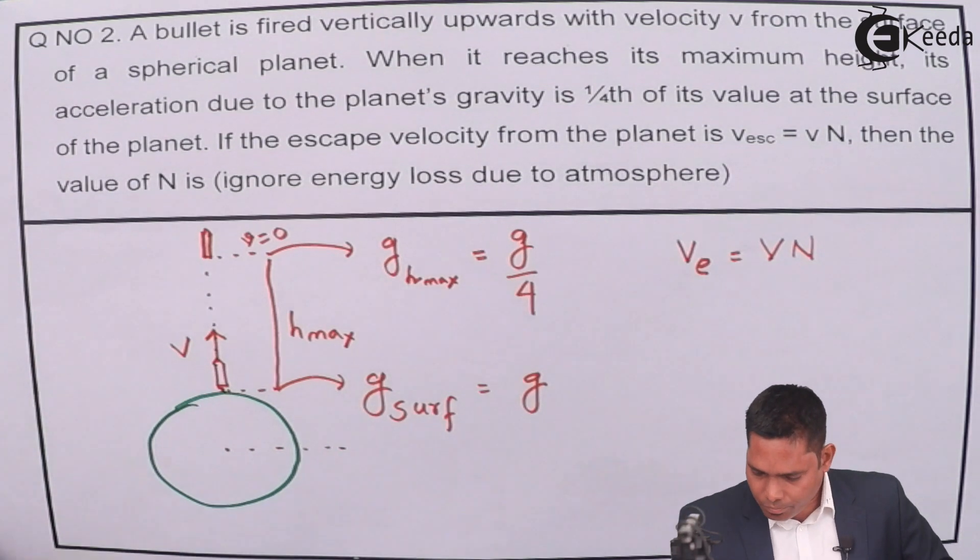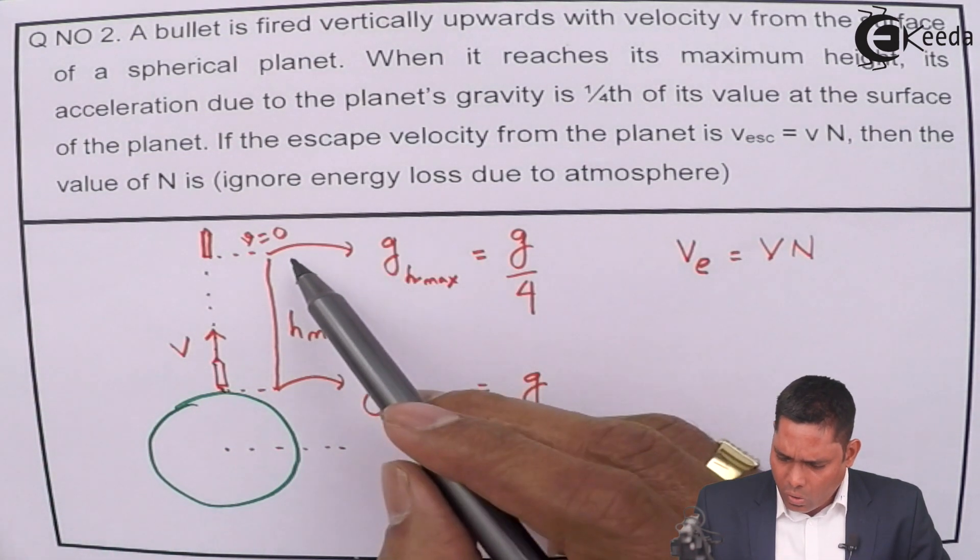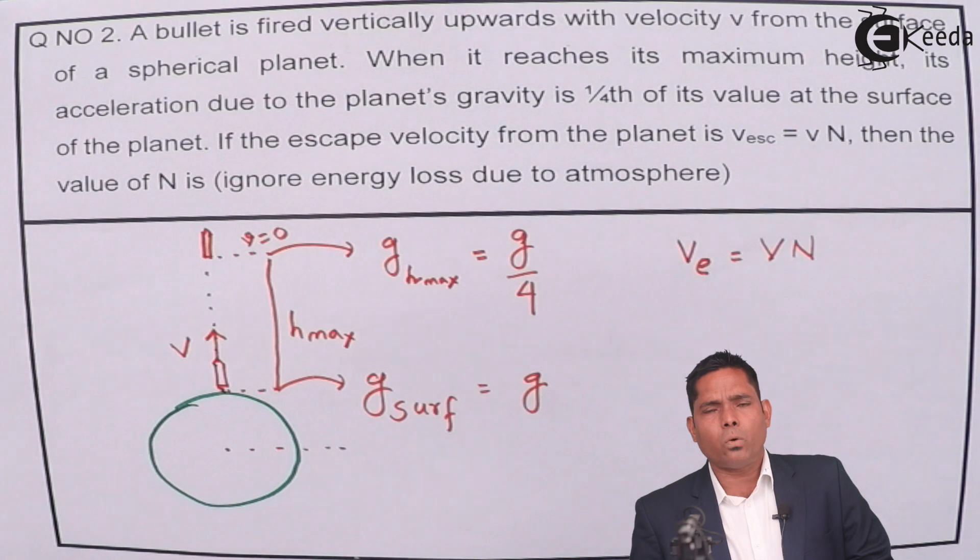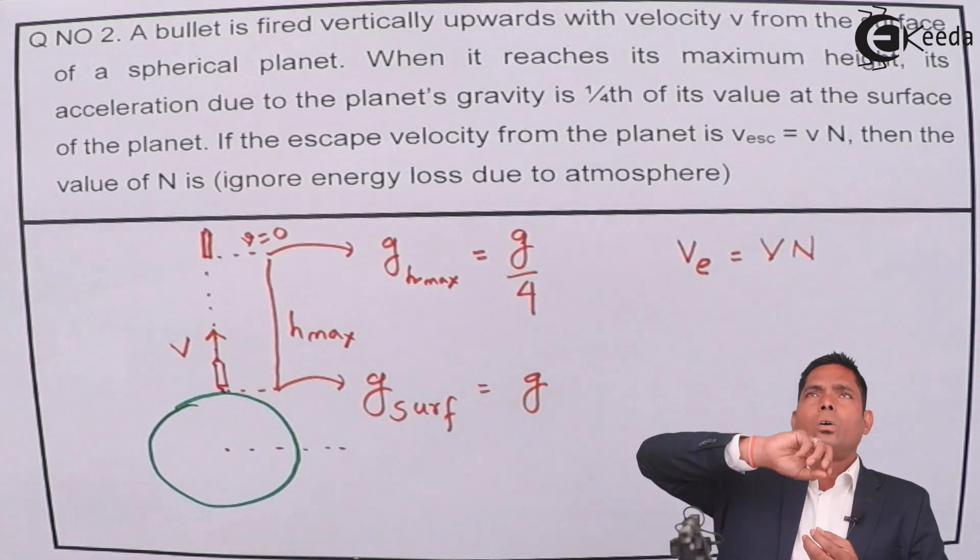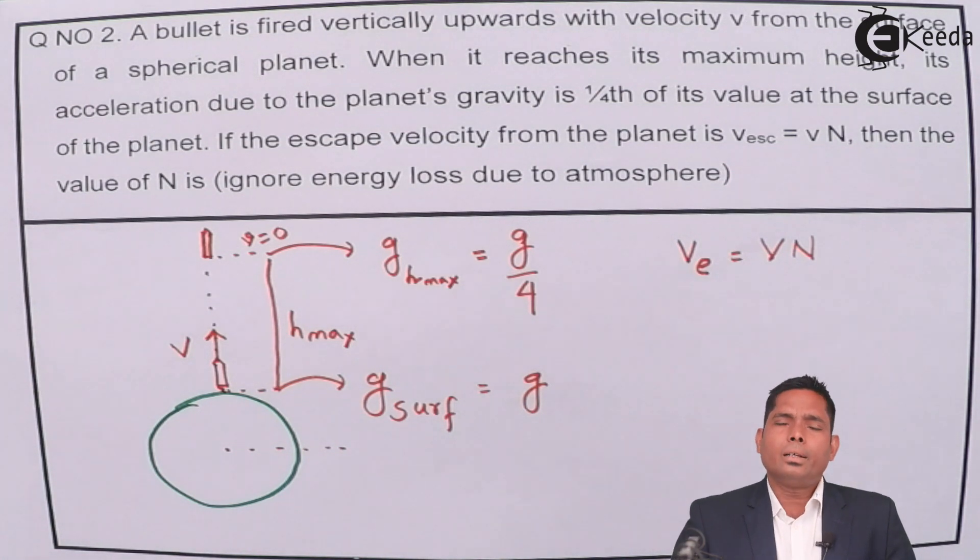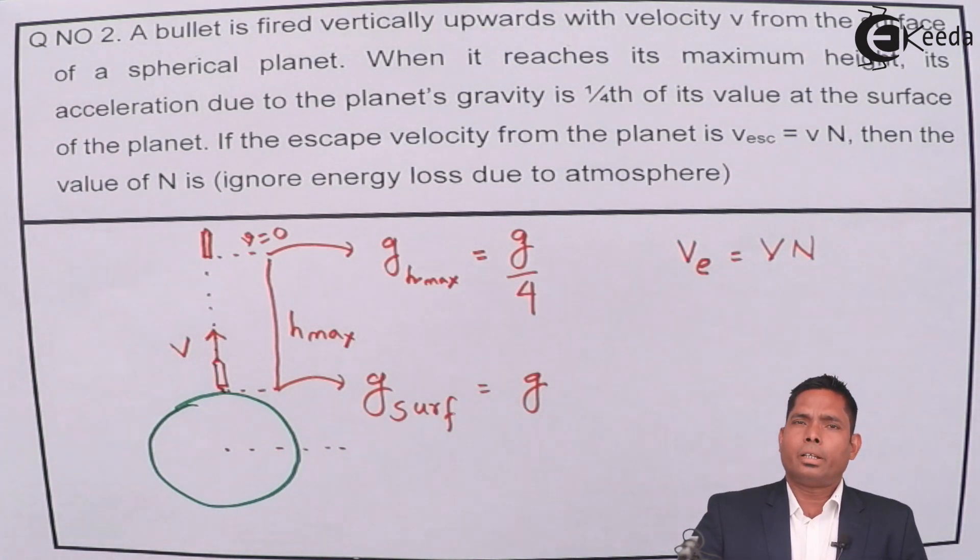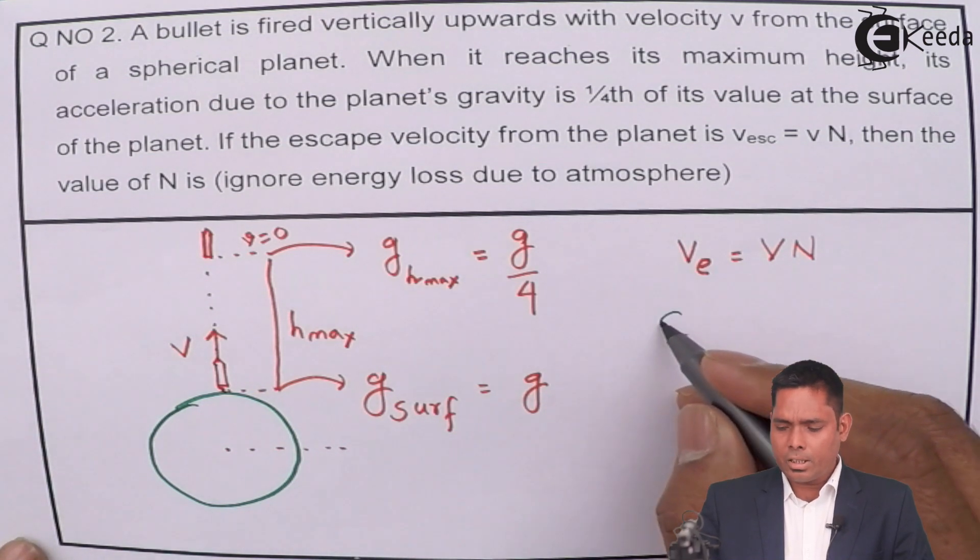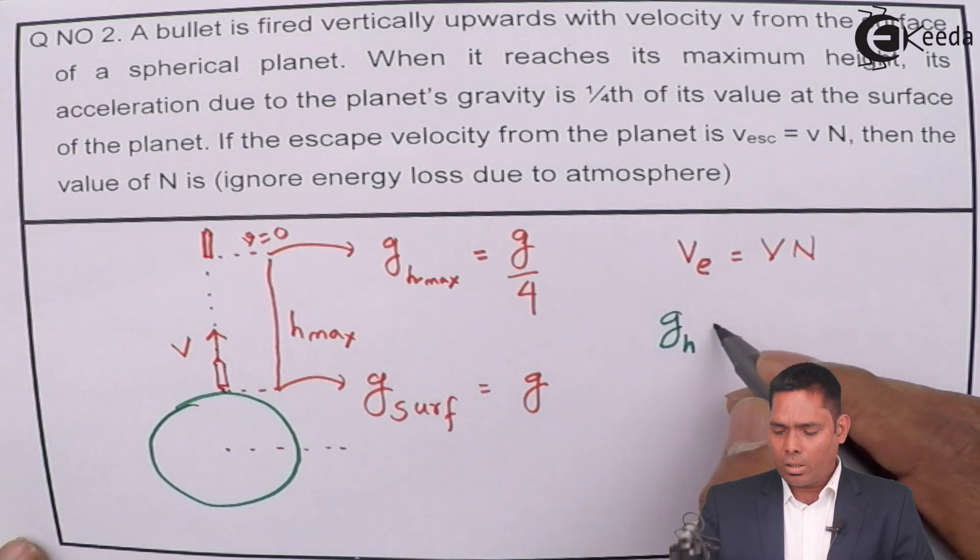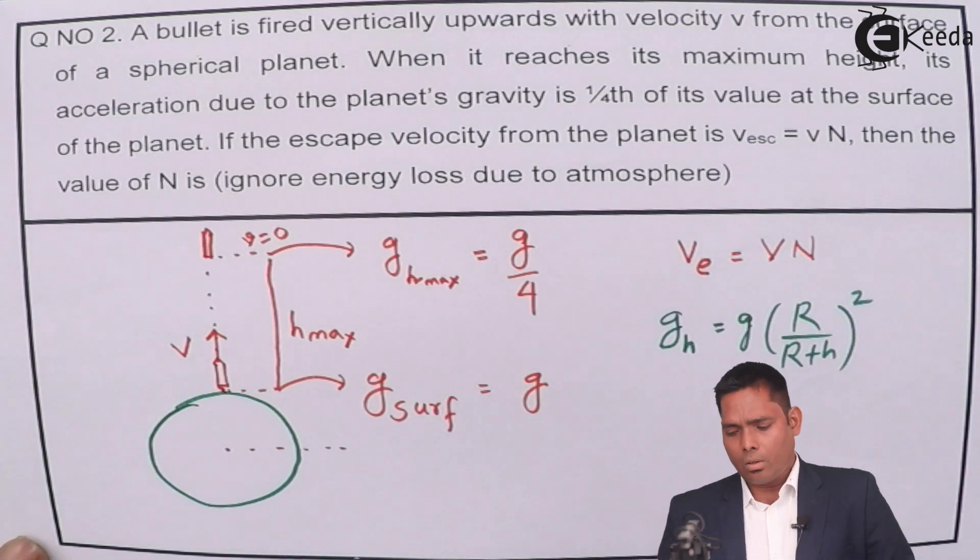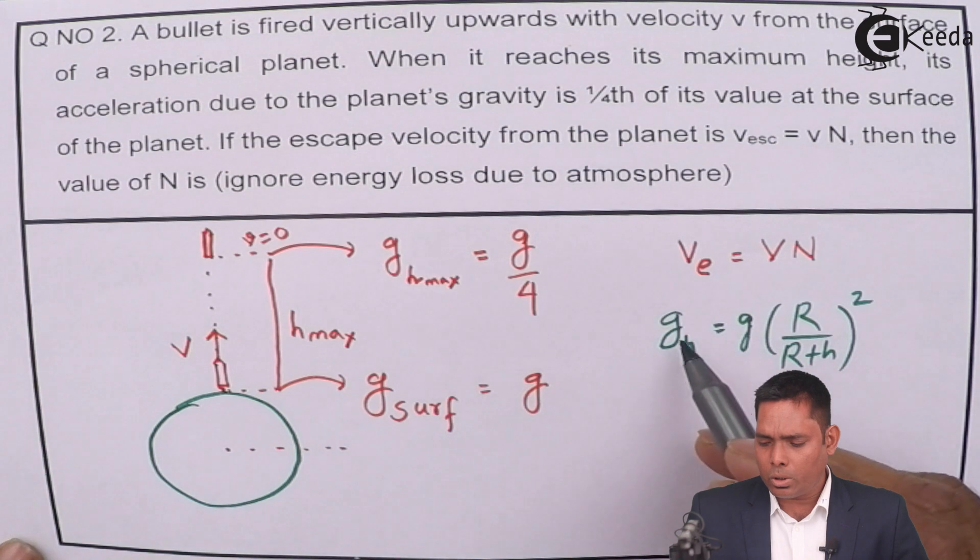Now we have to find what is the value if the acceleration due to gravity is g/4, then up to what height it goes and the acceleration becomes one fourth. We have to use the formula: when the body goes up, the acceleration due to gravity is g_h = g × R²/(R+h)².